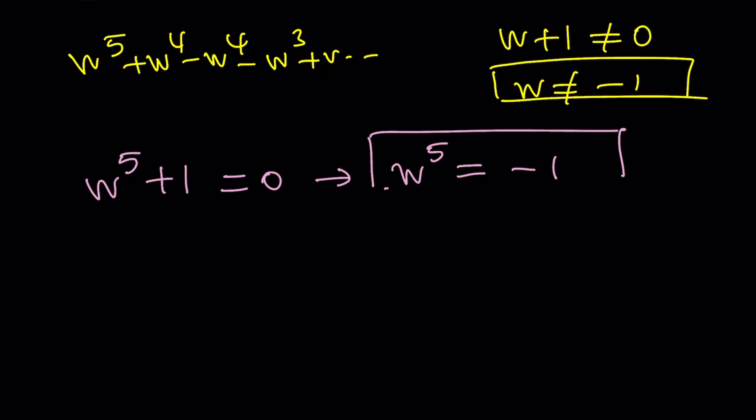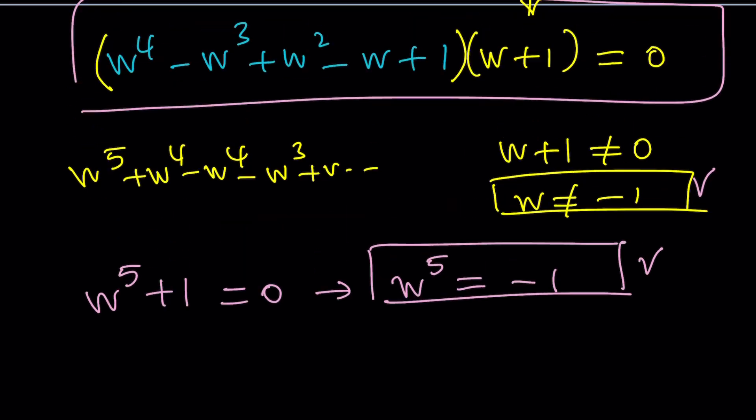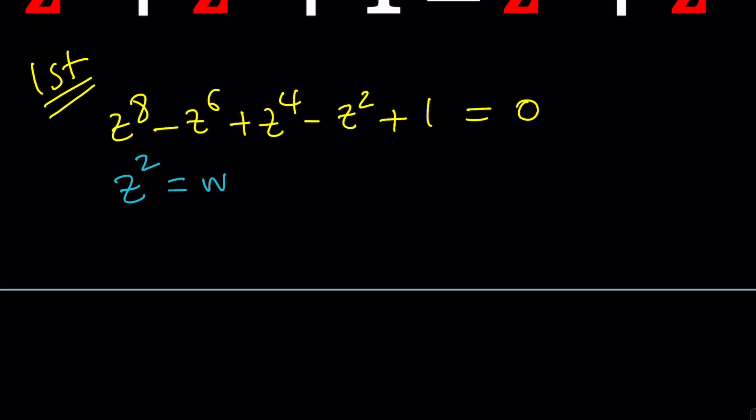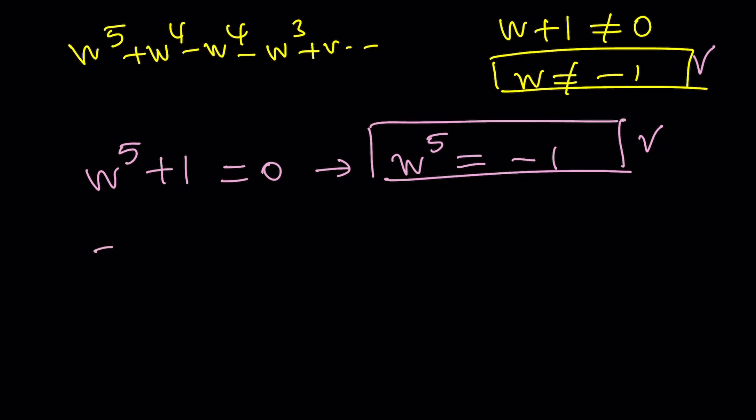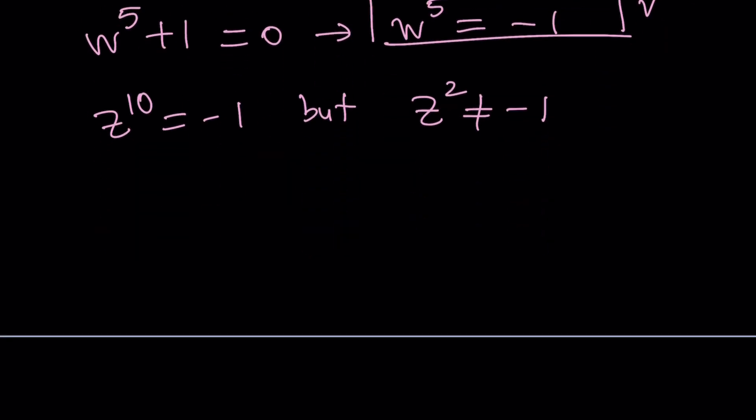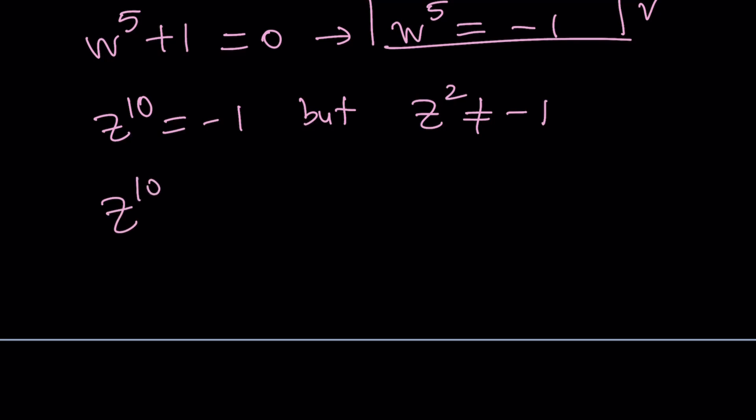The stipulation that w does not equal negative one. So how can w to the fifth be equal to negative one without the w being negative one? Wait a minute. We're in the complex world, so everything is possible. Multiple values. So we found two things. w to the fifth must be negative one, and w should not be negative one. Let's go ahead and turn it into the z world. z squared is w. So w is z squared. Replace w with z squared. You're going to get the following. z to the tenth equals negative one, but z squared does not equal negative one because w is z squared.